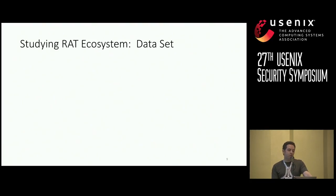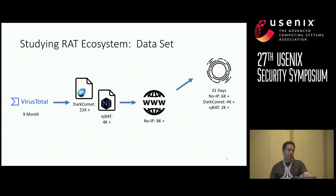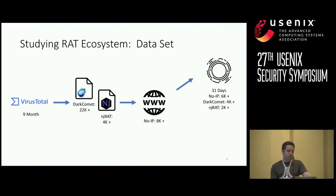We set out with this naive approach. VirusTotal was kind enough to give us access to collect RAT samples. We went after the NJRAT and DarkComet families because they were two of the five most prevalent RAT families, and they represent the two types of RAT protocols we found RATs use. During nine months, we discovered about 4,000 NJRAT and 22,000 DarkComet RAT samples. From these, we could extract about 8,000 NO-IP domains — NO-IP being the most popular DDNS service for RAT operators. We confirmed our hypothesis that we could claim many of these domains. During 31 days of sinkholing, we sinkholed about 6,000 NO-IP domains — almost 80% of domains in our dataset — where 4,000 were DarkComet and 2,000 were NJRAT.